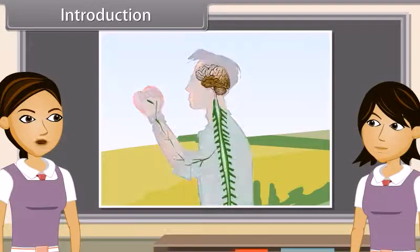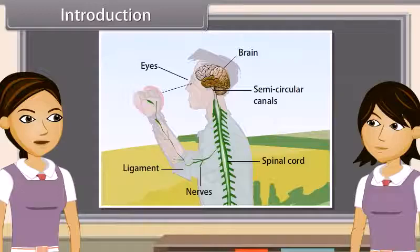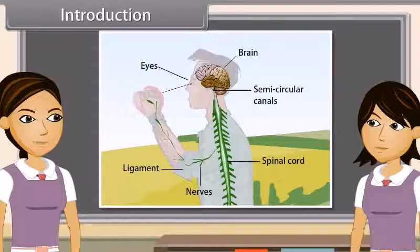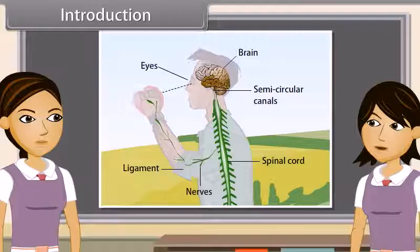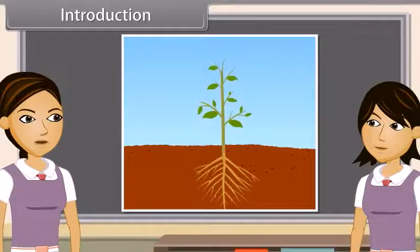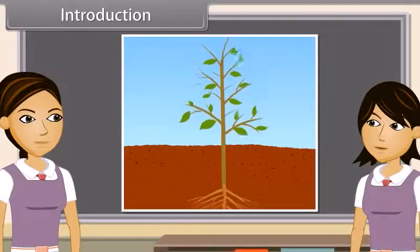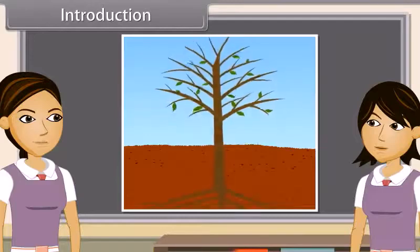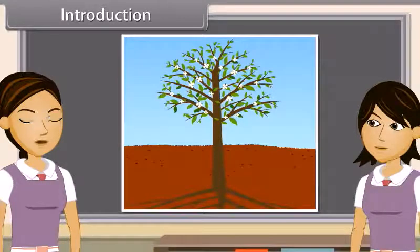Coordination is the working together of the various organs in a systematic manner so as to produce a proper reaction to the stimulus. As we already know, something is called living when a movement is observed in it. This movement can be due to growth, as in plants — a seed germinates and grows. This movement in plants is stopped after a particular time.